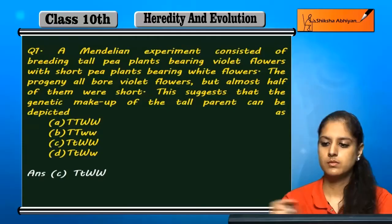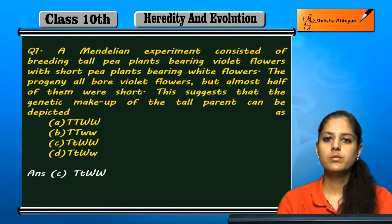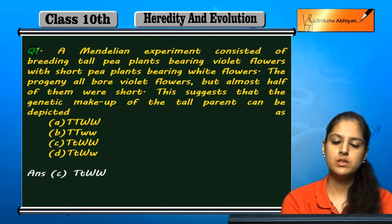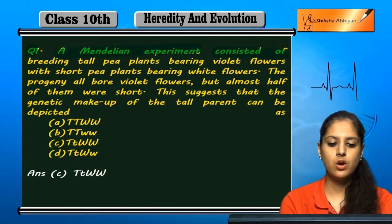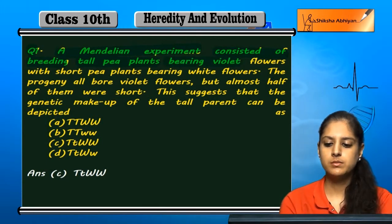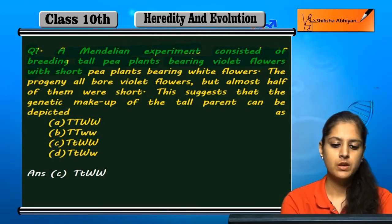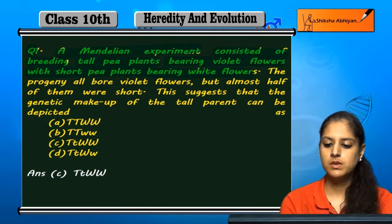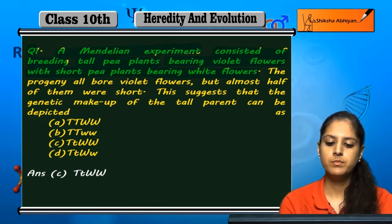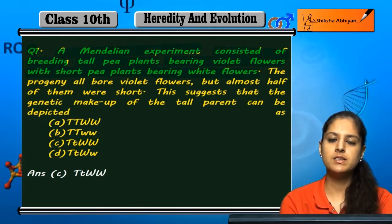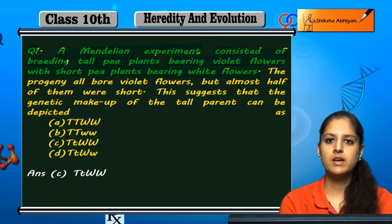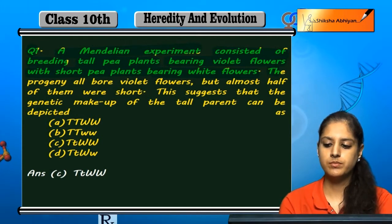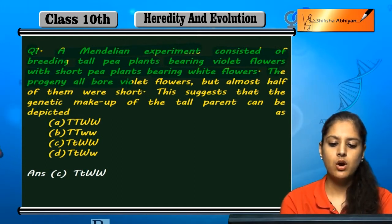Now we will discuss some questions on this chapter. First question: a Mendelian experiment consisted of breeding tall pea plants bearing violet flowers with short pea plants bearing white flowers. In this experiment, he took tall pea plants with violet flowers and bred them with short pea plants with white flowers.